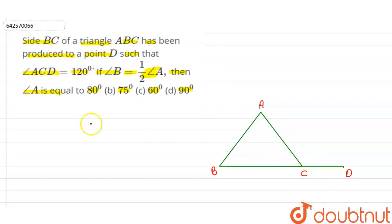So angle ACD is an external angle of the triangle. And here we have given the value of angle ACD is 120. And here we have also given that angle B equals angle A by 2.